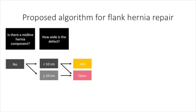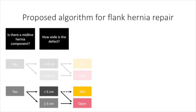With regard to approach, for isolated defects that are less than 10 centimeters wide, we recommend either open or MIS repair, while for those larger than 10 centimeters, we recommend open repair. For flank hernias with a concurrent midline defect, we generally recommend open repair. However, MIS approaches may be suitable in some situations where the defect is small.